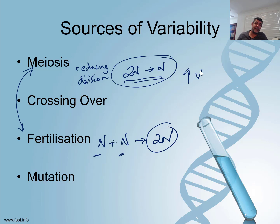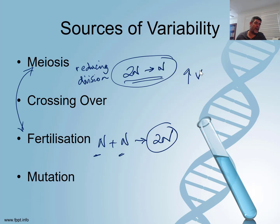Fertilization also increases variation because brothers and sisters — unless they're identical twins — don't look alike, even with the same mother and the same father. So even within the same parents we can have variation in the offspring. And if you don't have the same mother and father, the combinations continue to increase exponentially with the number of individuals in any population. The more individuals there are, the more opportunity for cross-breeding and mixing of genetic material, which again increases that variation.